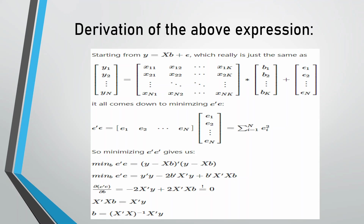For minimization we equate the derivative to 0. Further simplification gives X-transpose*X*b = X-transpose*y, and therefore b = (X-transpose*X)^(-1) * X-transpose * y. This is the final expression which we have derived.